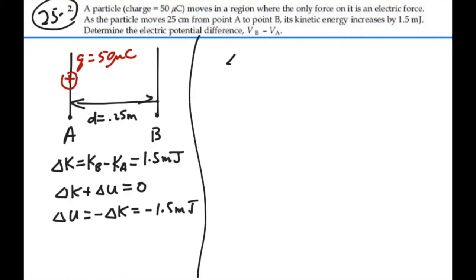Well, by definition, the change in potential energy should equal the charge times the change in potential. So our change in potential will equal the change in potential energy divided by the charge. That's going to be equal to negative 1.5 millijoules times 10 to minus 3 over the charge, which was 50 microcoulombs times 10 to minus 6.